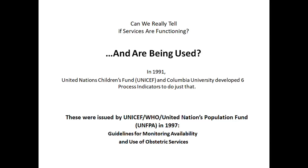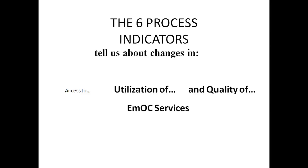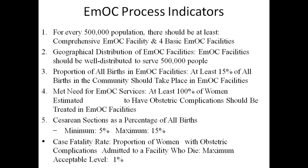The guidelines are titled: Guidelines for Monitoring the Availability and Use of Obstetric Services. In general, process indicators show changes in the conditions that lead to an outcome. The six process indicators tell us about the access to, utilization of, and quality of emergency obstetric care services.